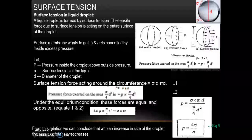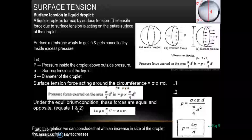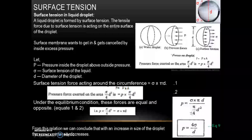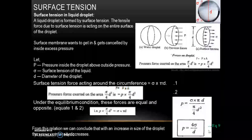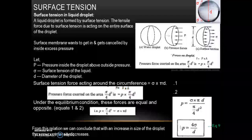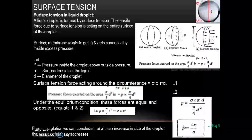Under equilibrium condition both these forces have to be equal and opposite. Equating equations 1 and 2, we get P·(pi/4)·D² = sigma·pi·D. Simplifying, P = 4·sigma/D. This is equation 9. From this relation we can conclude that with increase in size of the droplet — that is, diameter D — the pressure intensity decreases, since P is inversely proportional to D.